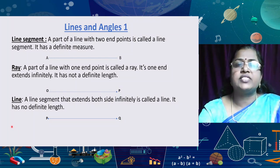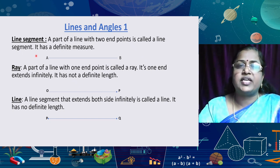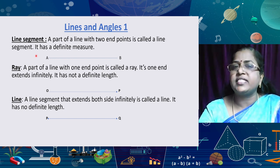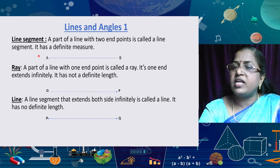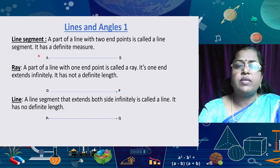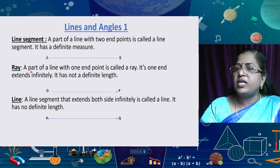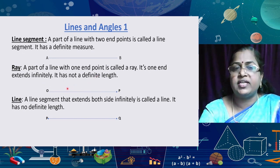First, we start with the line segment. What is a line segment? The definition is: the part of a line with two endpoints is called a line segment, and it has a definite measure. Here we are given a line segment AB — it has two endpoints A and B, and we can give a definite measure for this line segment.